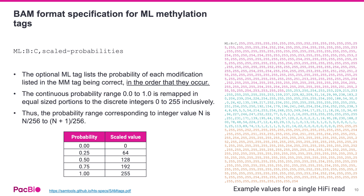The probability of the 5mC and 6mA calls being accurate is stored in the corresponding ML tag. This is scaled from the continuous probability range of 0 to 1, but remapped in full integer form of 0 to 255. For example, a 0 ML encoding means 0% probability, whereas a 255 encoding represents 100% probability.